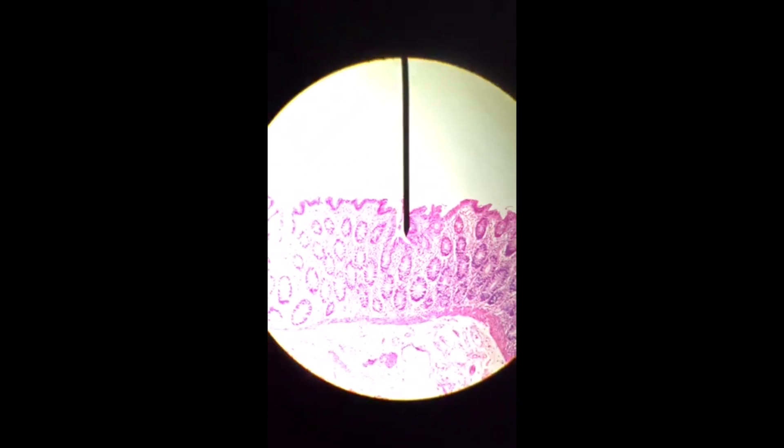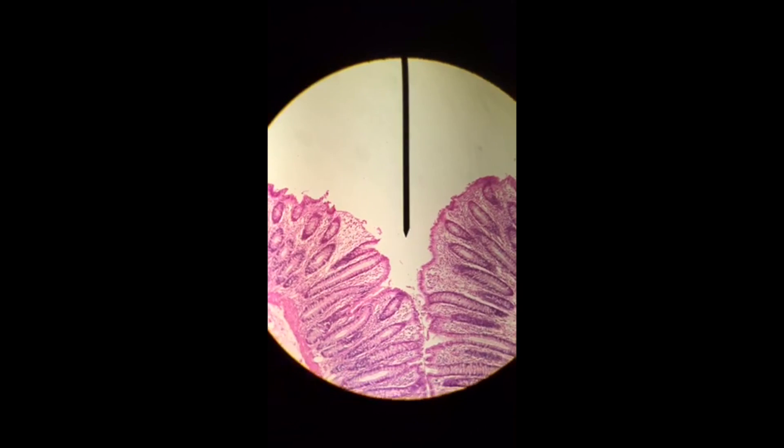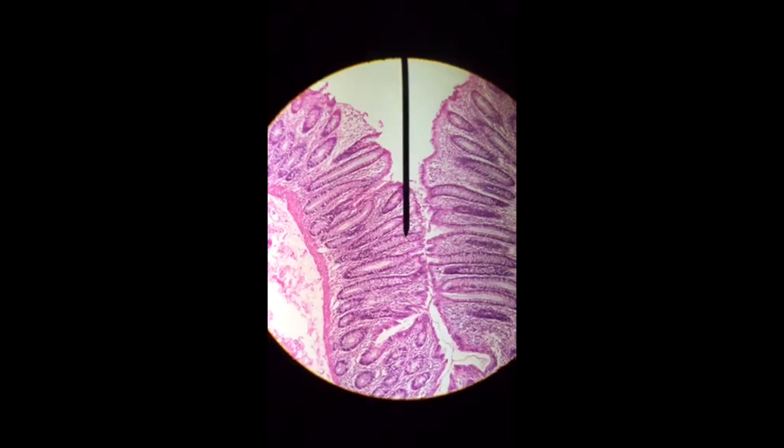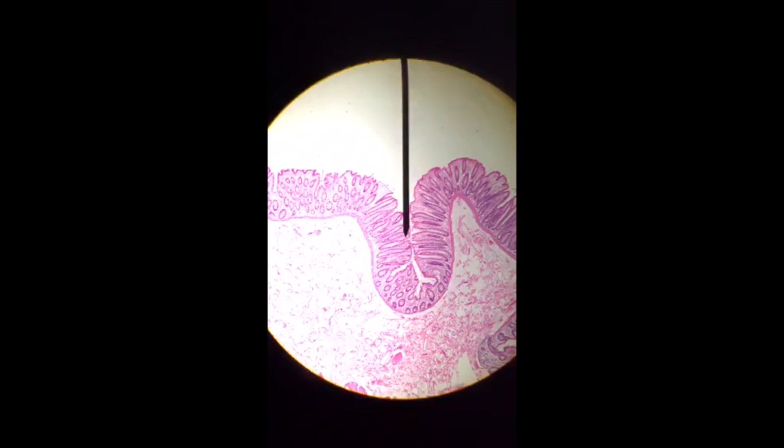Notice that these are glands that are going to assist in absorbing water and electrolytes. As well, our goblet cells are going to be secreting mucus to help facilitate movement of your feces through this large tube.